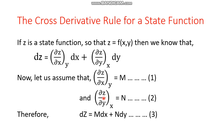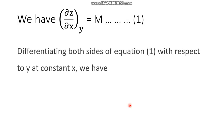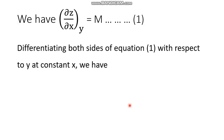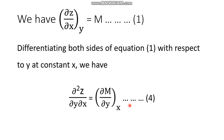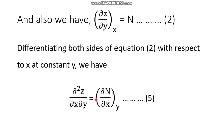Similarly, for equation number 2, the left-hand side would be differentiated with respect to x, keeping y constant, so that would be reflected in the right-hand side as del N by del x at constant y. Differentiating both sides of equation 1 with respect to y at constant x, we have del²z / (del y del x) equals del M by del y at constant x — this is equation number 4. Similarly, equation number 5 is: del²z / (del x del y) equals del N by del x at constant y.